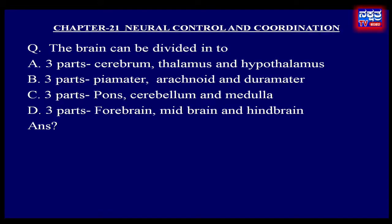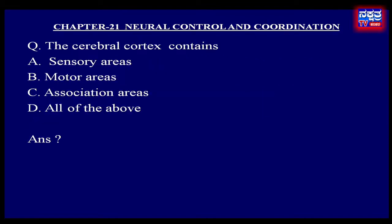The cerebral cortex contains: A. Sensory areas, B. Motor areas, C. Association areas, D. All of the above.